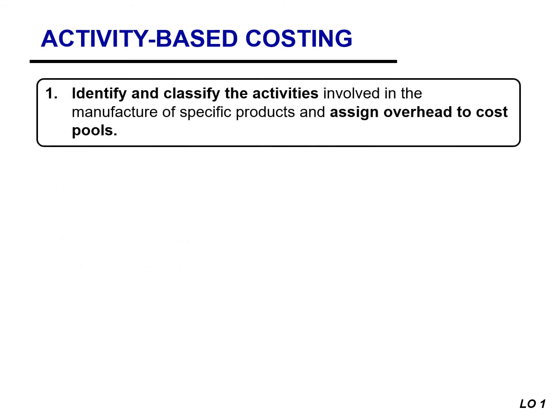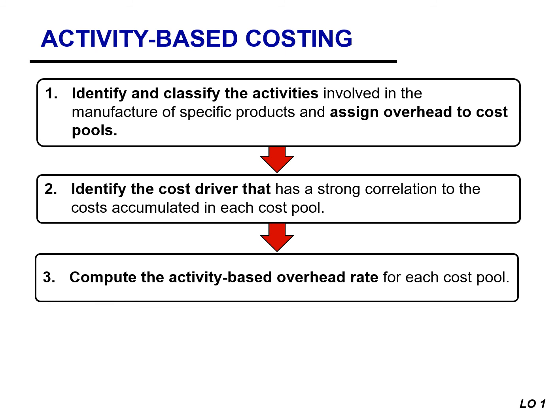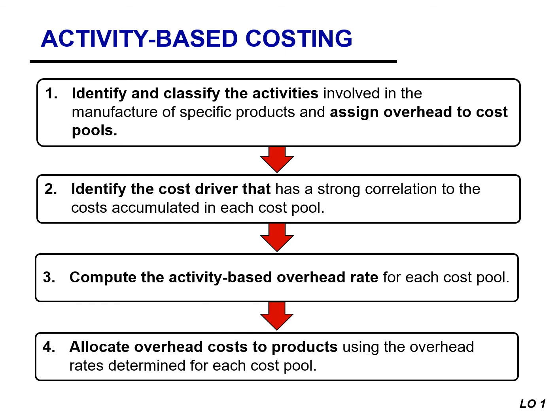Let's take a look at the four steps. In stage one, step one, we assign overhead costs to activity cost pools. In the second stage, steps two through four, we allocate the overhead in the activity cost pools to products or services using cost drivers. In step two, we identify the cost drivers. In step three, we calculate an activity-based overhead rate for each cost pool. And in step four, we allocate overhead costs to products and services using the rates established in step three.